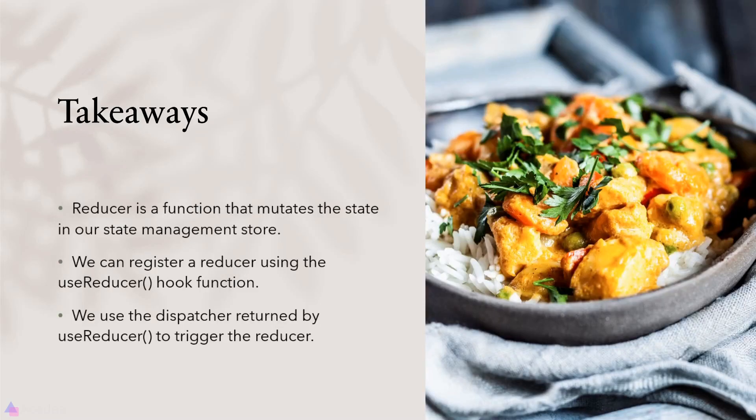Key takeaways: A reducer is a function that mutates the state in our state management store. We register a reducer using the useReducer hook function, and we use the dispatcher function returned by useReducer to trigger the reducer.